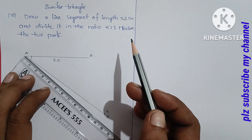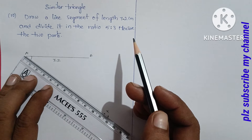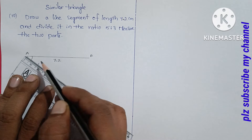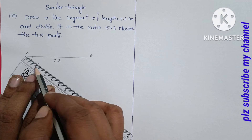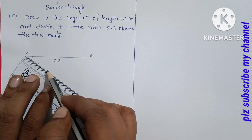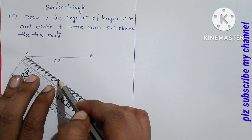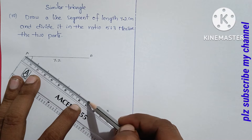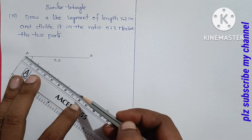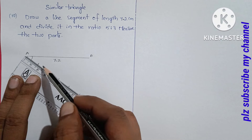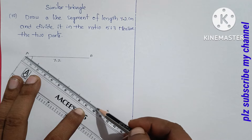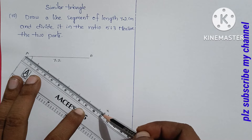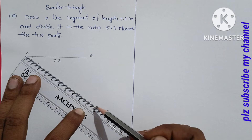The seven parts are not equal yet. Using the scale, mark equal divisions — one point one, one point five, one point five again, six, six point five — continuing until eight equal parts are marked on the ray.